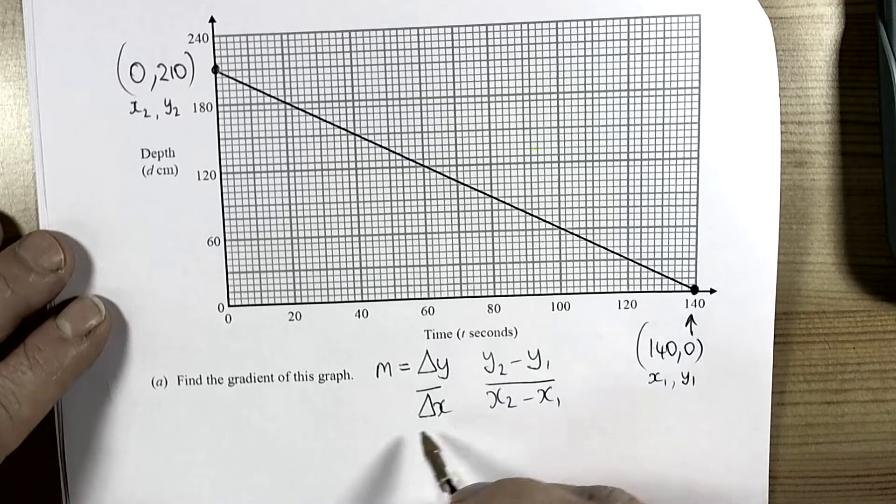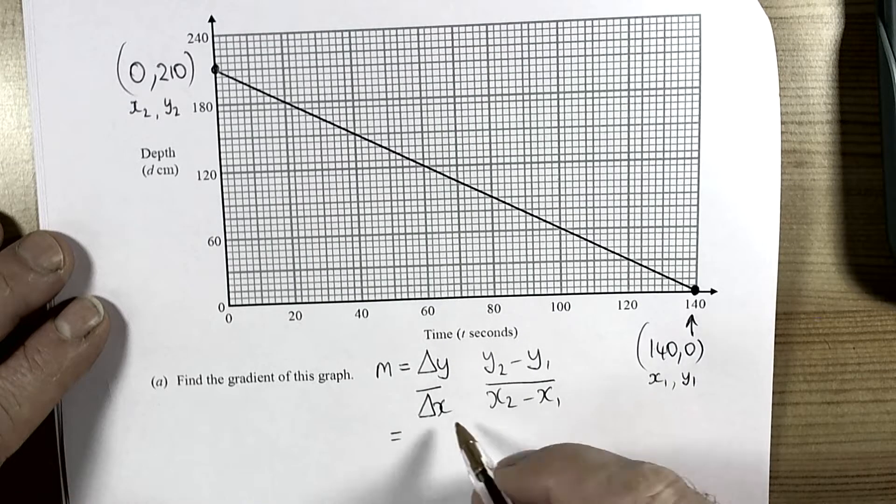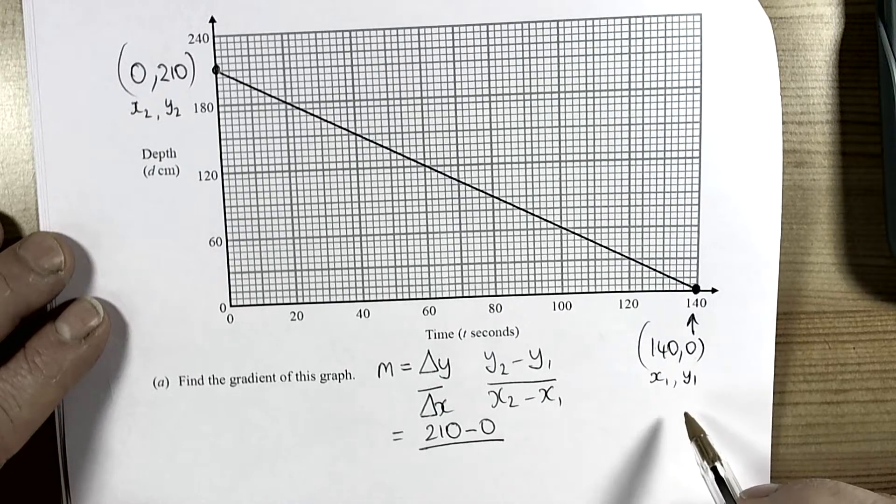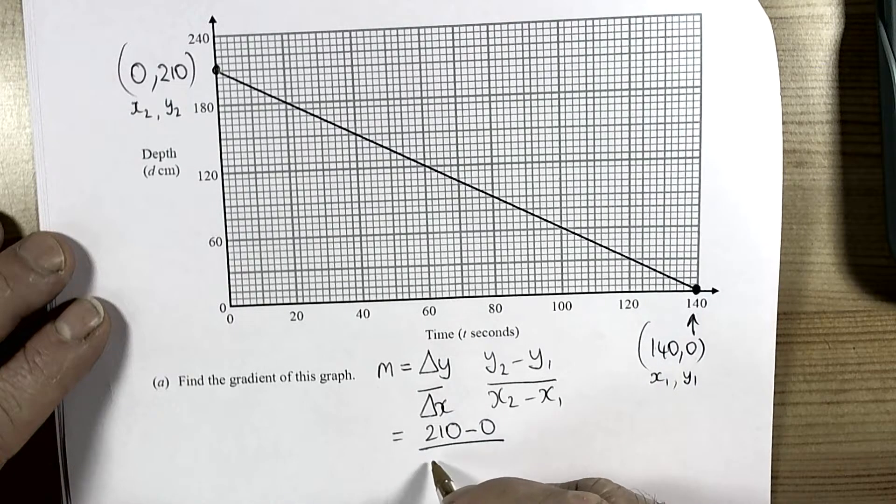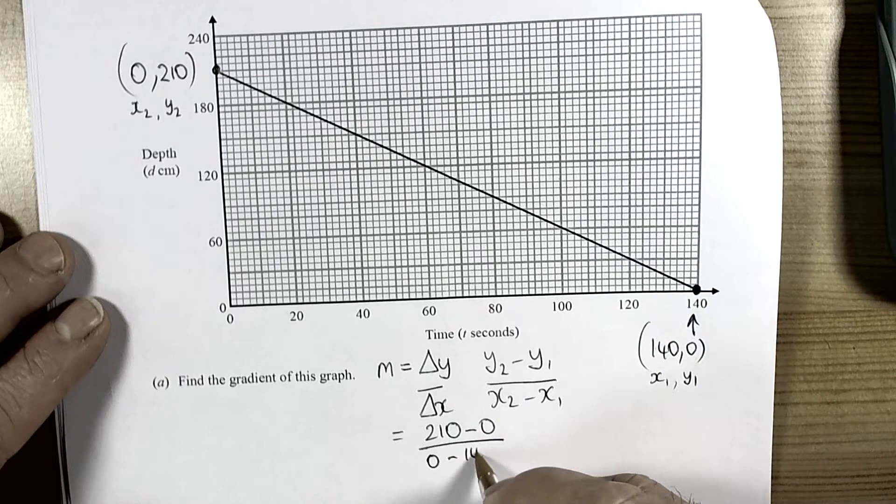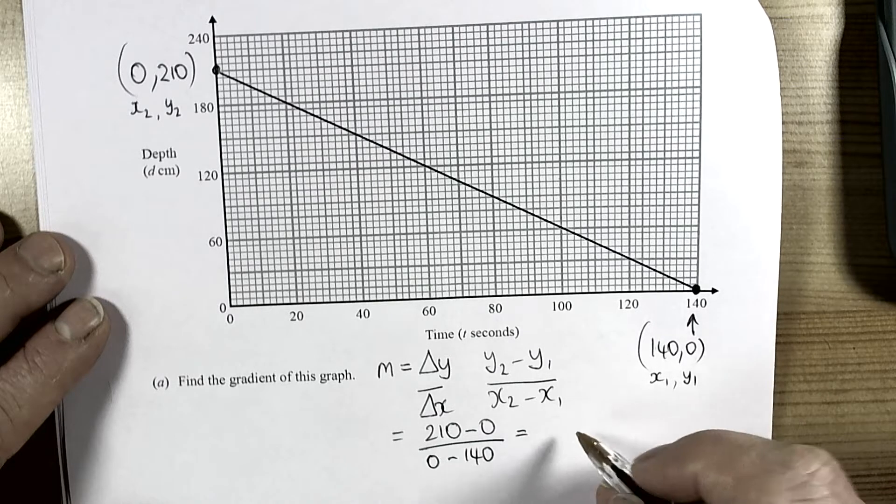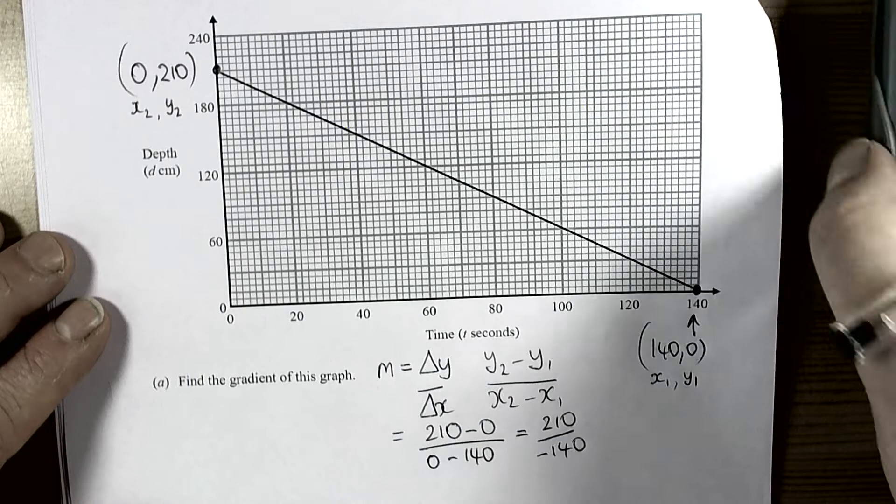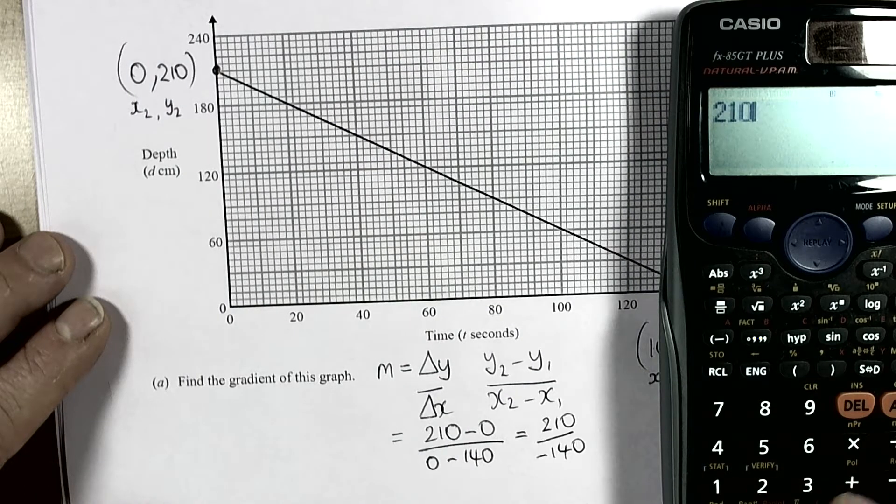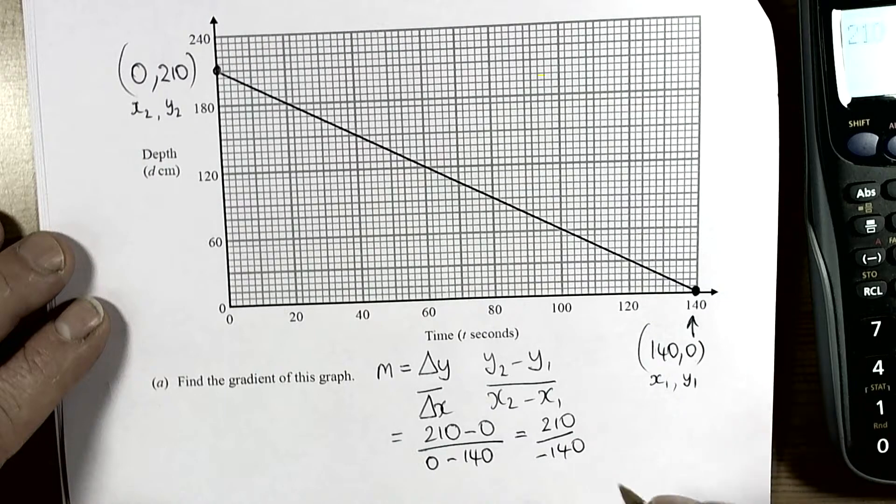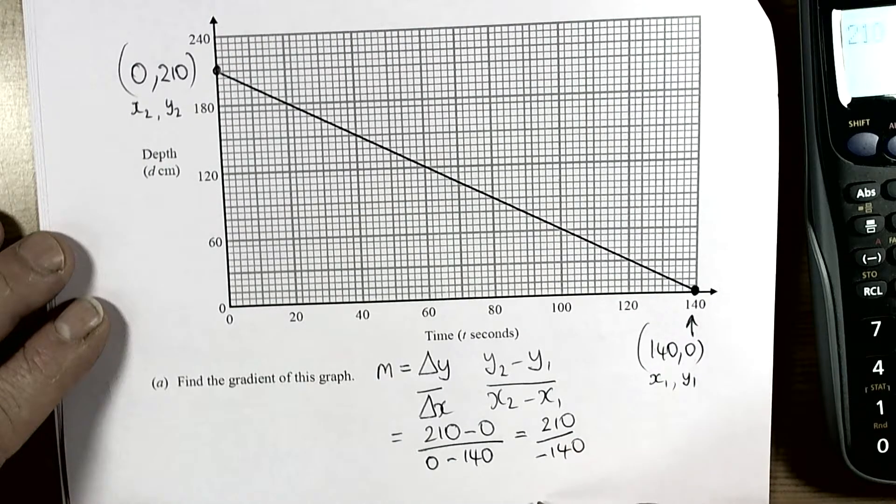Okay so we put those into the equation. So y2 was 210 take away y1 which was 0, and we divided that by x2 which was 0, take away x1 which was 140. So we've got 210 over negative 140. Calculate it, so 210 divided by 140 equals 1.5. This is a positive divided by a negative so it will be a negative answer. Negative 1.5.